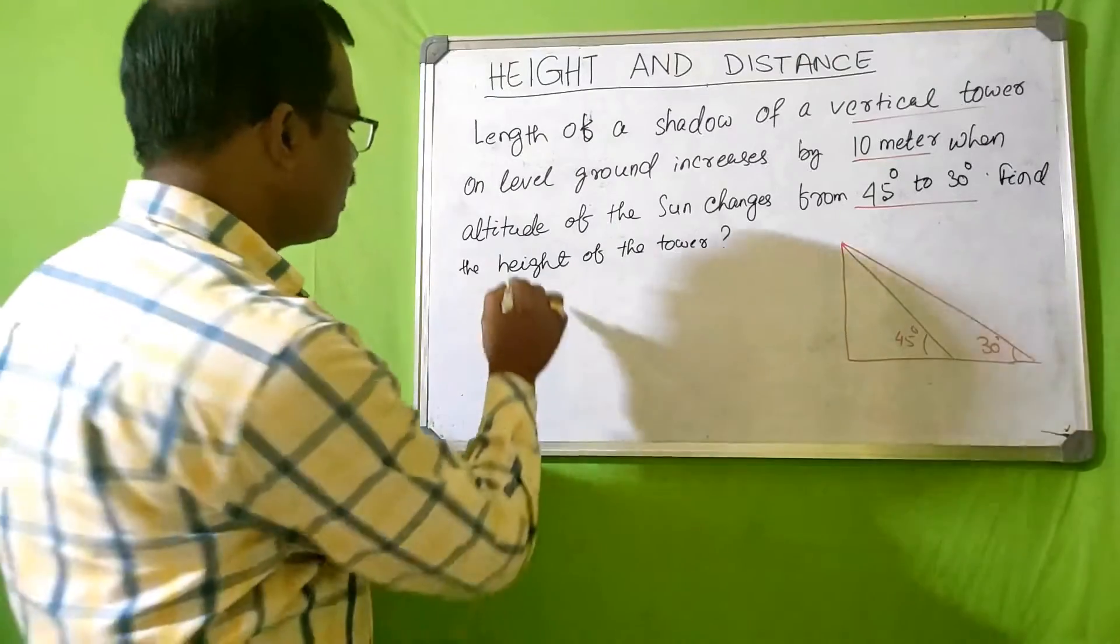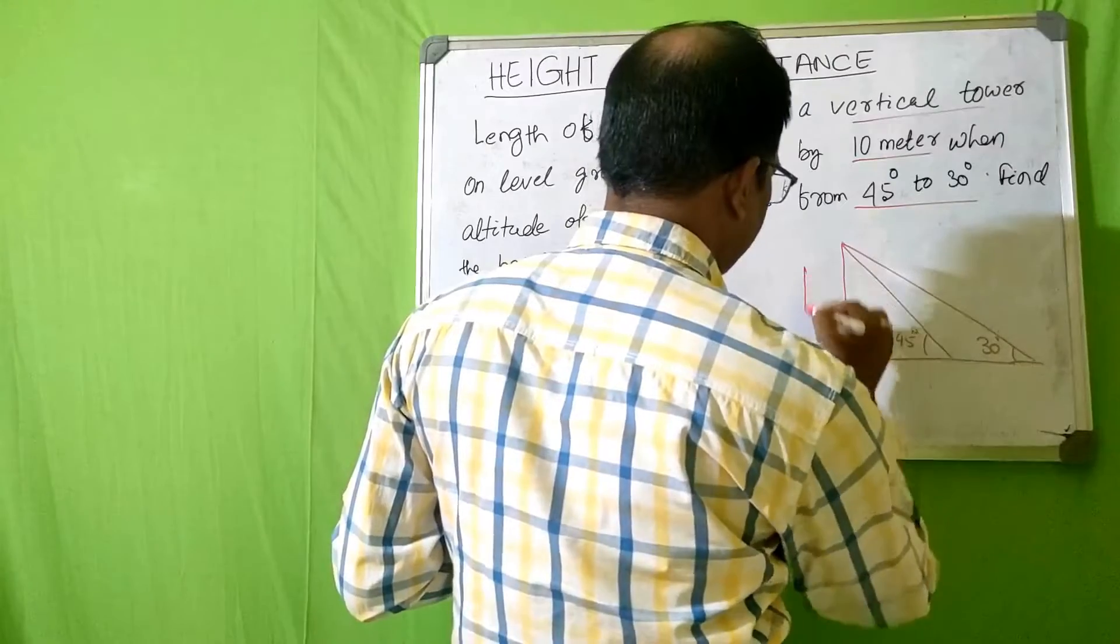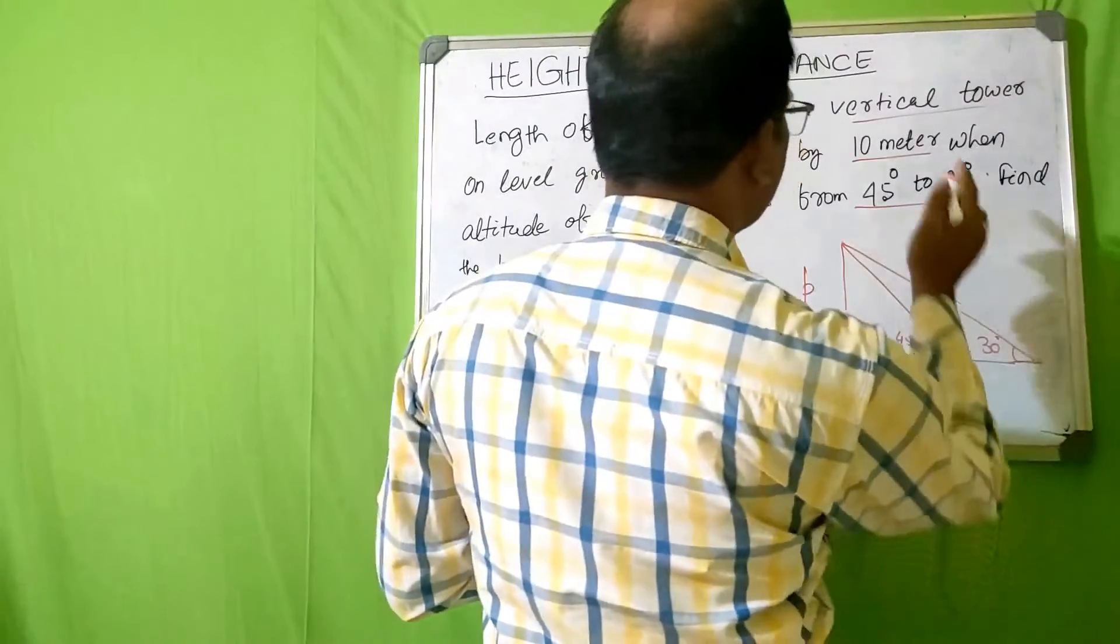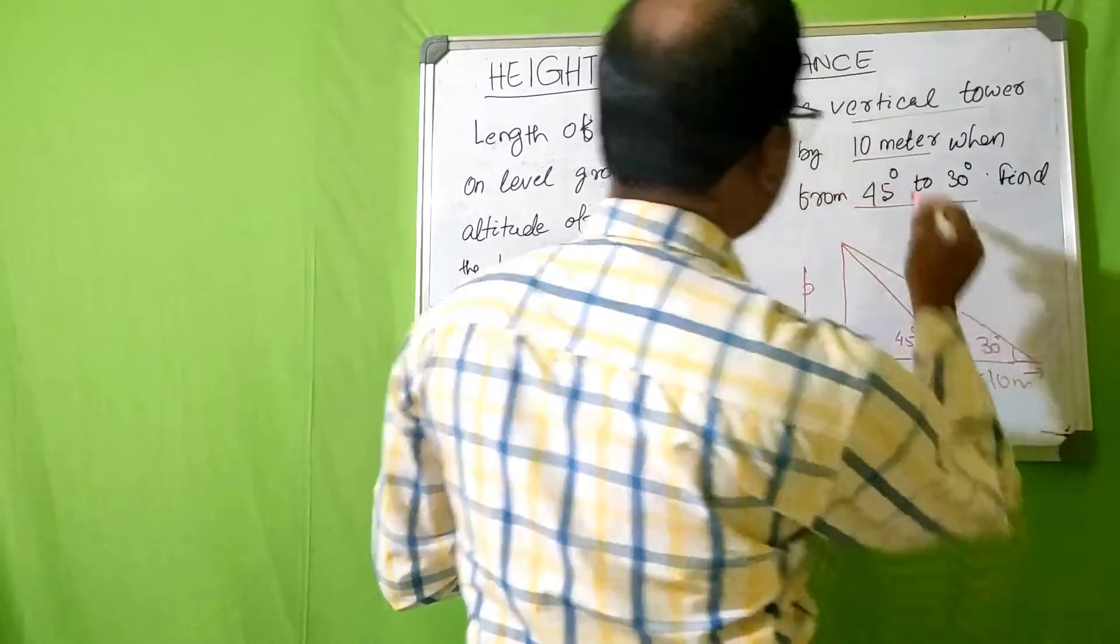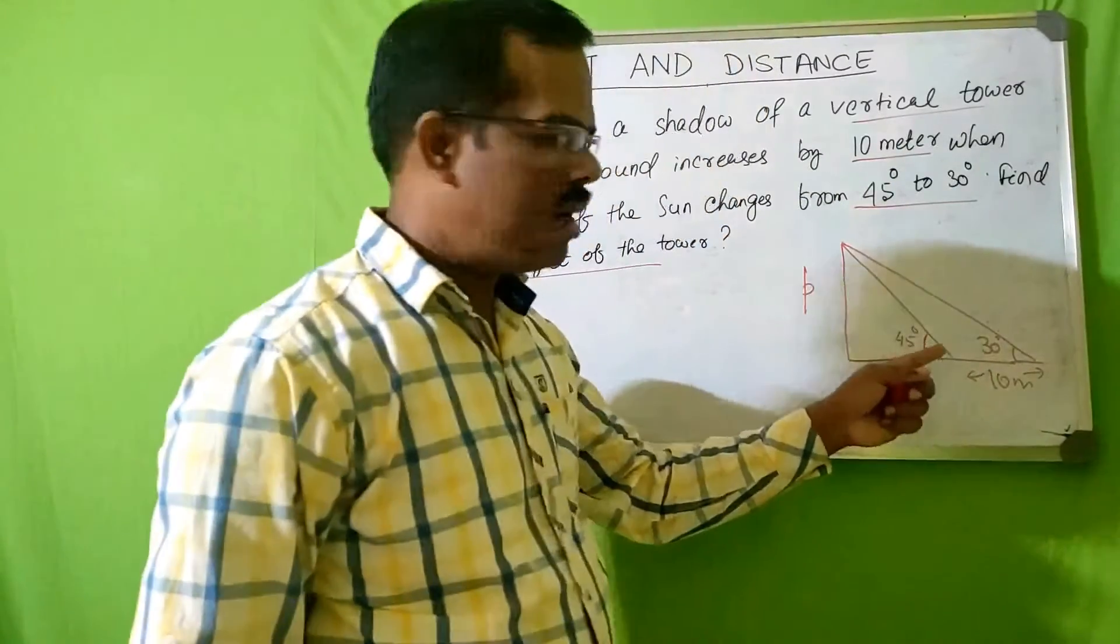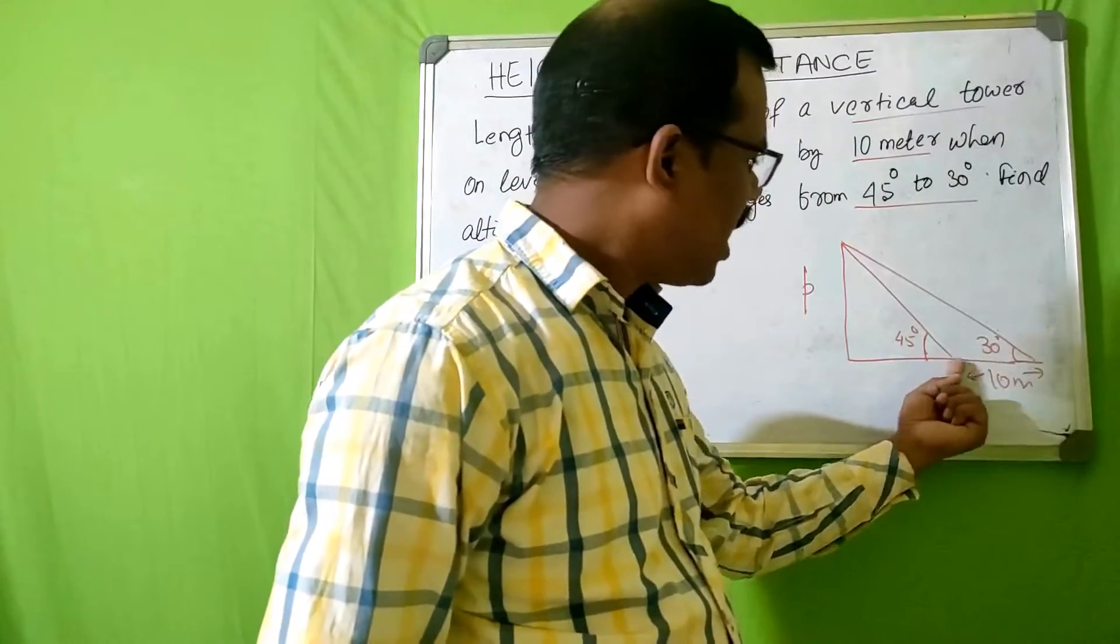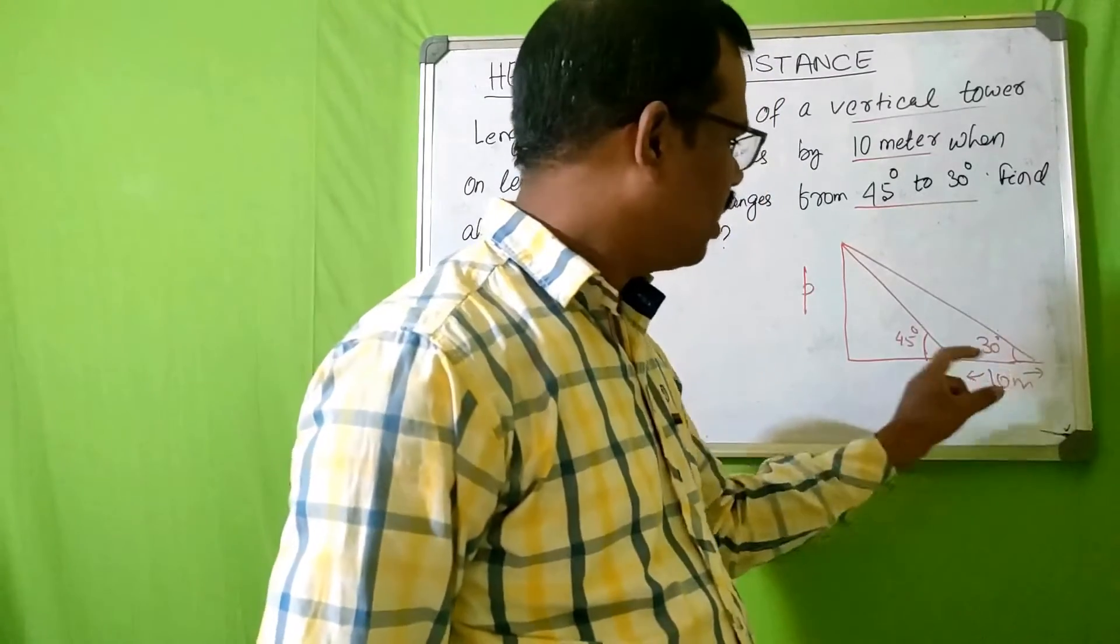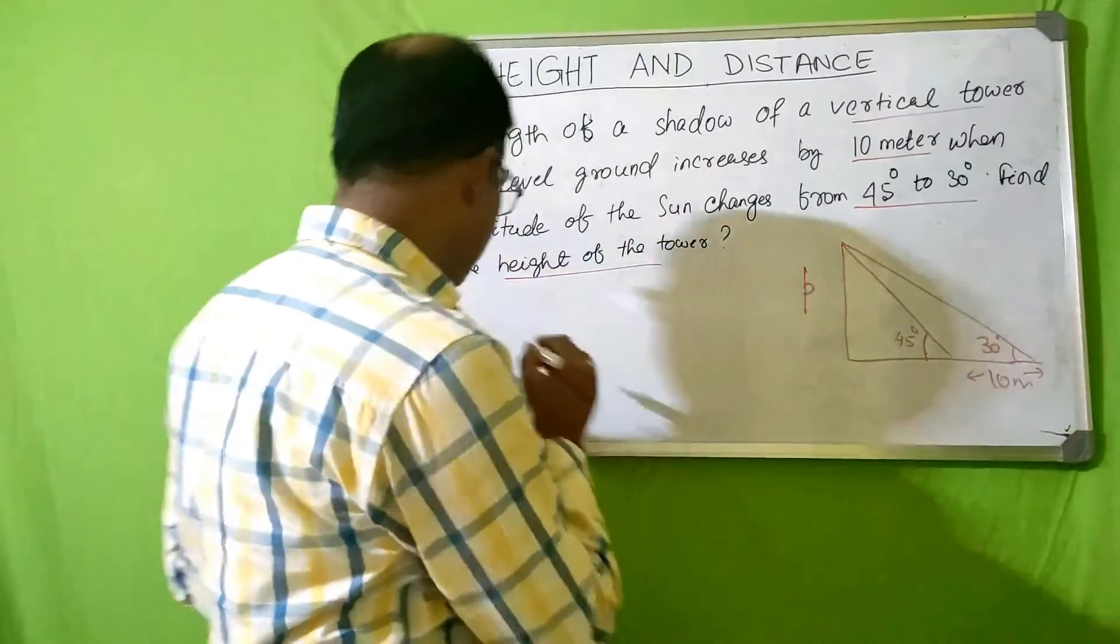And what we are trying to find out is the height of the tower. Let's say this is the perpendicular p, and the distance is given as 10 meters. This distance is given 10 meters. It is increasing. First it was 45 degrees, and then when the altitude changes from 45 degrees to 30 degrees, the shadow is increasing by 10 meters. So this difference is given. This looks like the example that I have already given.